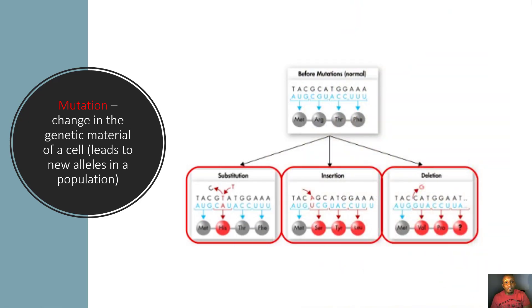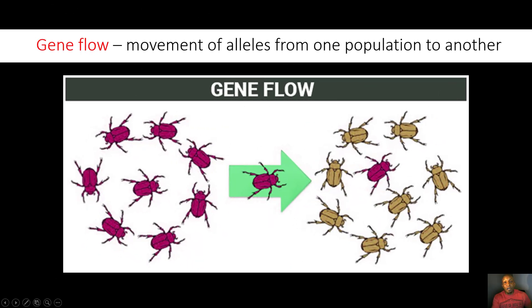The next mechanism of evolution is mutations — changes in the genetic material of a cell that lead to new alleles in a population. There are three basic types: substitutions, insertions, and deletions. These changes alter the genotype or DNA sequence and ultimately change the phenotype — the physical appearance — of organisms in a population.